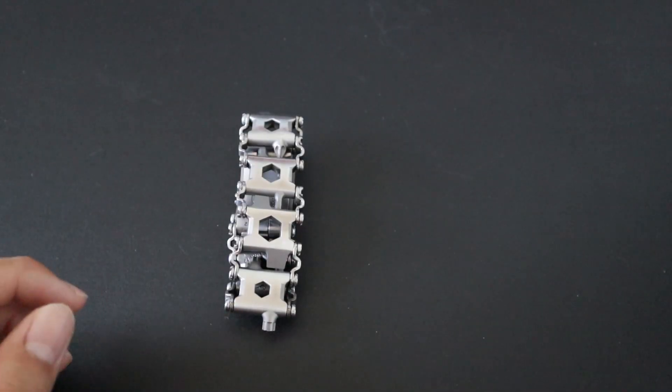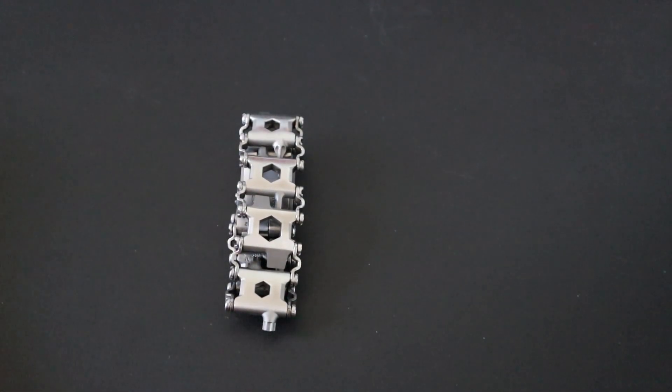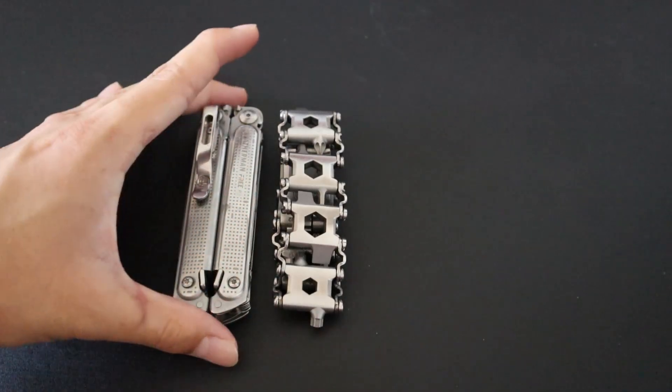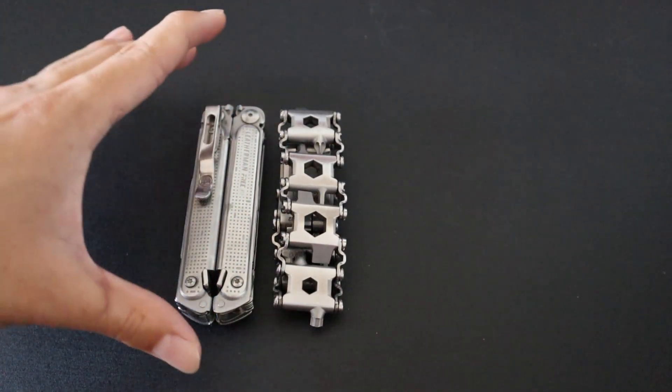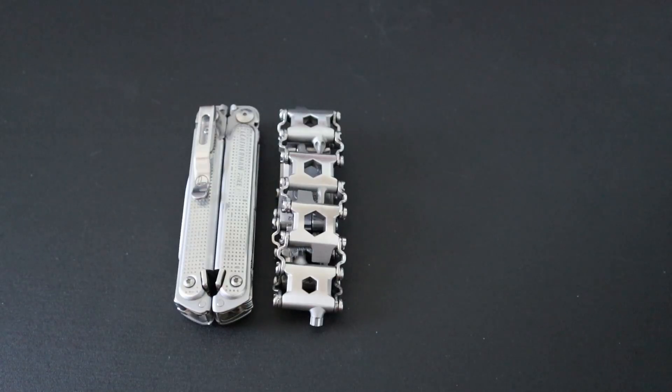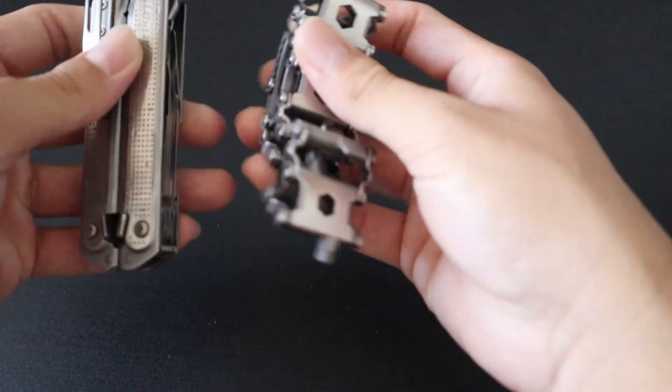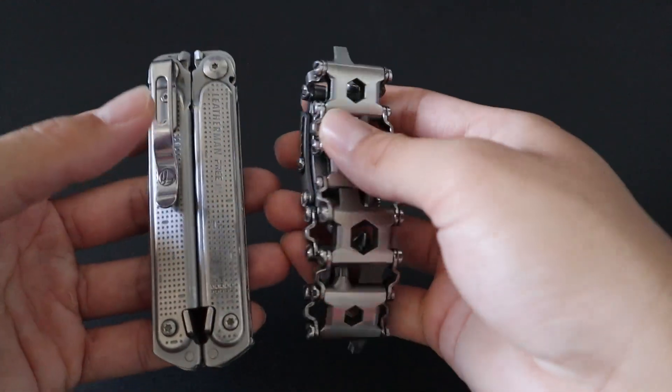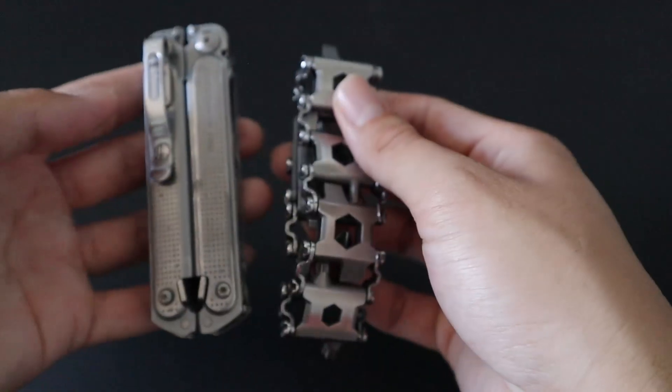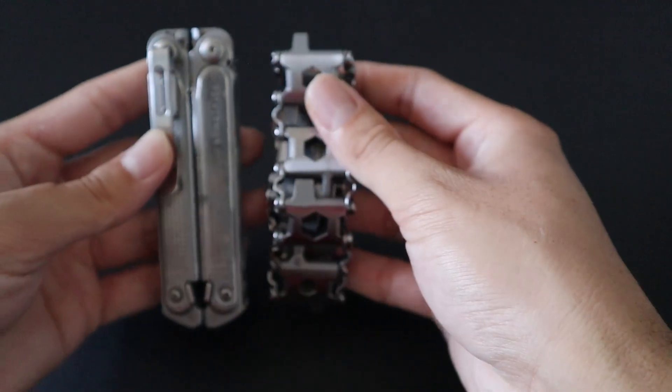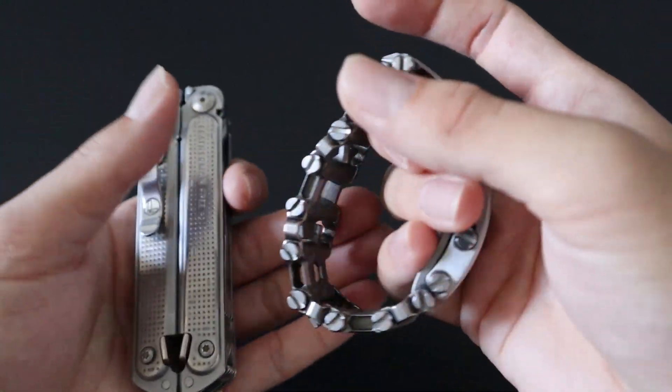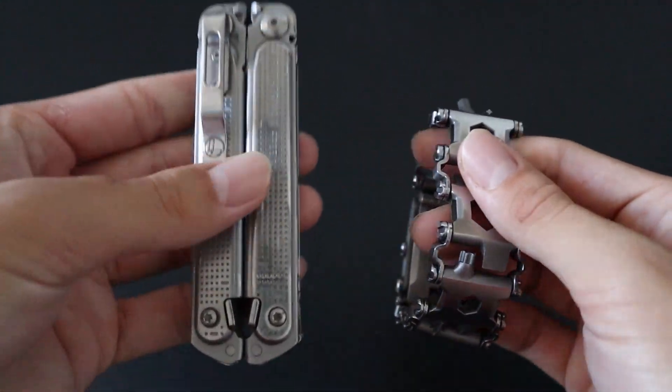Now before we dive deeper into my Tread setup, let's do a small size comparison. This is going to be different from my regular size comparisons because of how unique this tool is. First, we'll compare it to my favorite EDC Leatherman tool, the Free P2. The Tread right here, obviously it is fit to size my smaller wrist, so it might not be as big as your personal Tread, but as you can see, it's relatively the same in terms of just the outline.